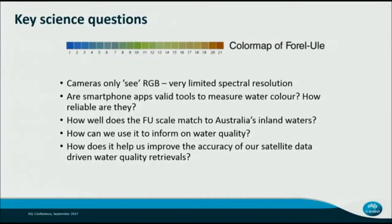The problem, as Hans pointed out, is that a camera — just like the human eye — only really measures in RGB: red, green, and blue. The spectral resolution is very limited. So the question then is: how good are these apps for actually relating to water quality? While much of the previous two talks were on the citizen science part, my concentration has been on what we're going to get out of this project to actually deliver better science. The key science questions are: are these smartphone apps valid tools to measure water colour? How reliable are they? How does performance change when overhead conditions change — cloudy environments versus clear sky? How does the appropriately named FU scale match to Australia's inland waters? How can we use it to inform our water quality? And importantly, how can we use that information to improve the accuracy of our satellite products?